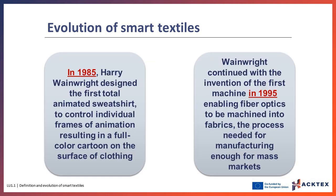In 1985, an inventor named Harry Wainwright designed the first total animated sweatshirt, consisting of fiber optics, LEDs, and a microprocessor to control individual frames of animation, resulting in a full color cartoon on the surface of clothing. Wainwright continued with the invention of the first machine in 1995, enabling fiber optics to be machined into fabrics — the process needed for manufacturing enough for mass markets.